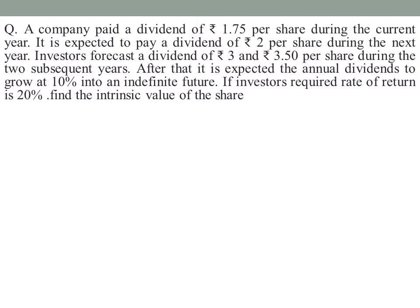In the current year the dividend is already paid, so D0 of Rs. 1.75 is not included in the calculation. The extraordinary growth period covers 3 years, with varying dividends of Rs. 2, Rs. 3, and Rs. 3.50. After that, there is a constant growth period where dividends grow at 10% annually. So the extraordinary growth period is the initial stage and the constant growth period follows.